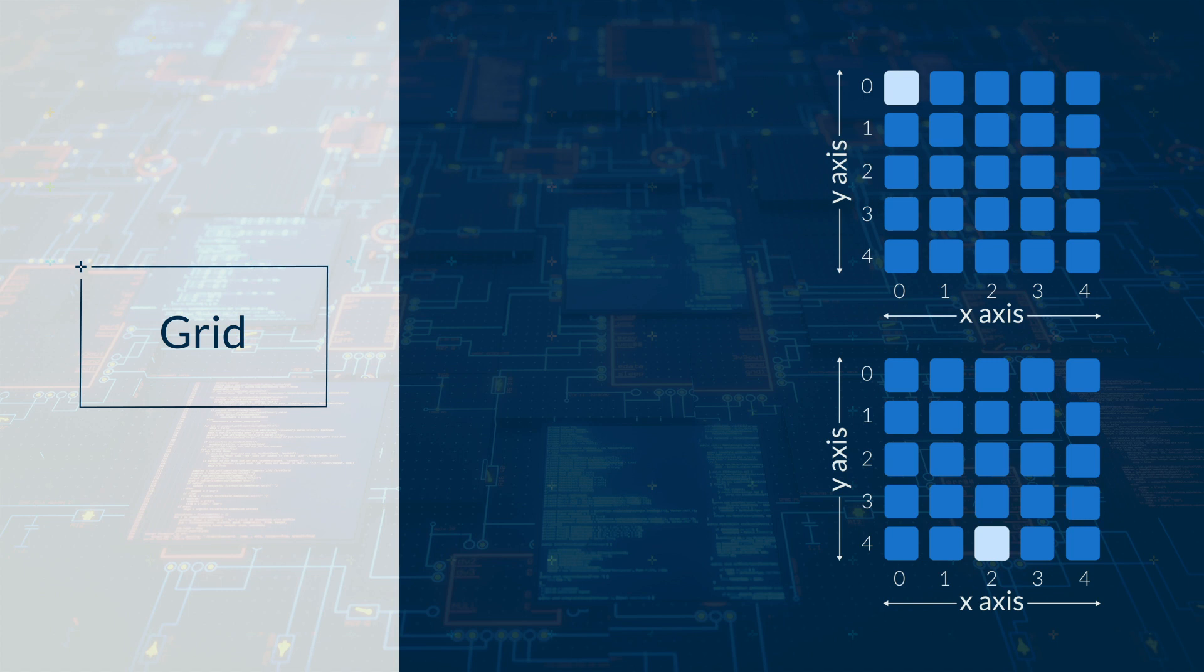Look at the grid. The top left LED is in position x equals 0, y equals 0. The other LED in the bottom image is in position x equals 2, y equals 4.